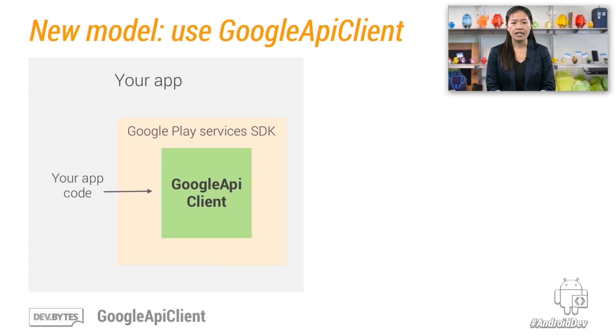Fortunately, with this new and simplified interaction model, you'll only need a single Google API client to connect to the Google Play Services app. When you set up the client, you specify whichever APIs you want to use. This greatly improves the developer experience because you only have one client to worry about connecting and handling callbacks for.